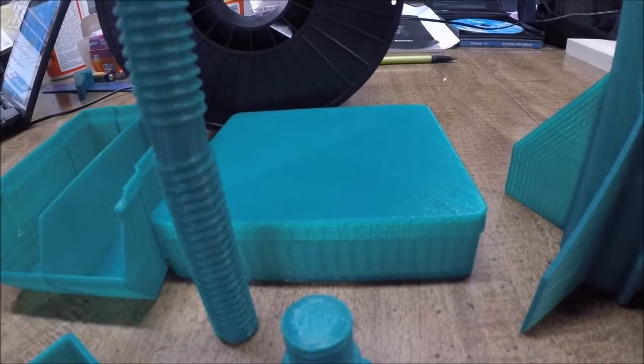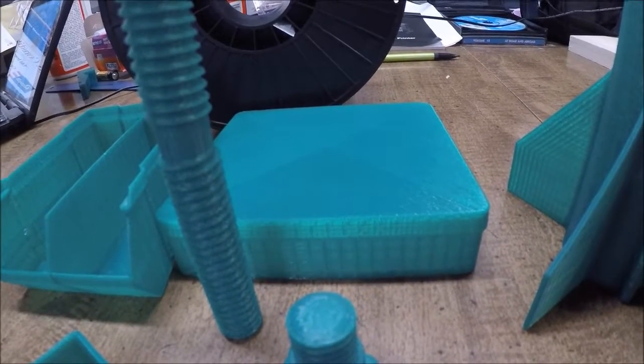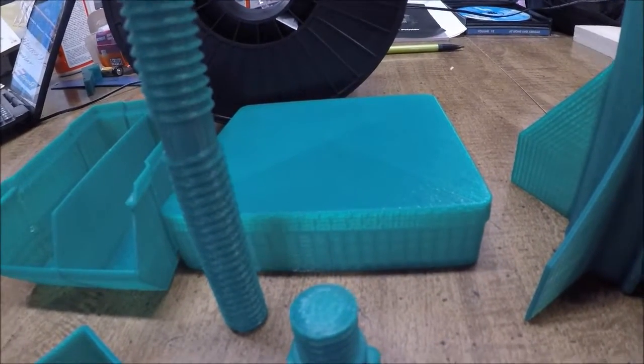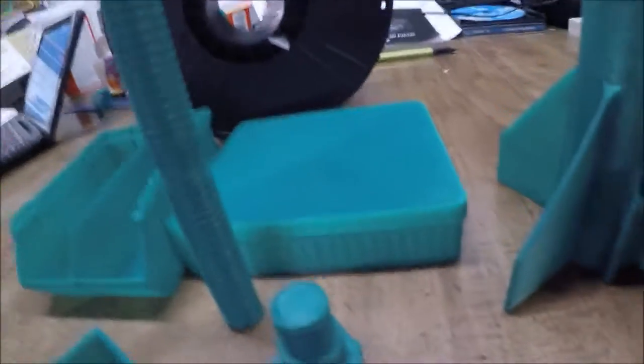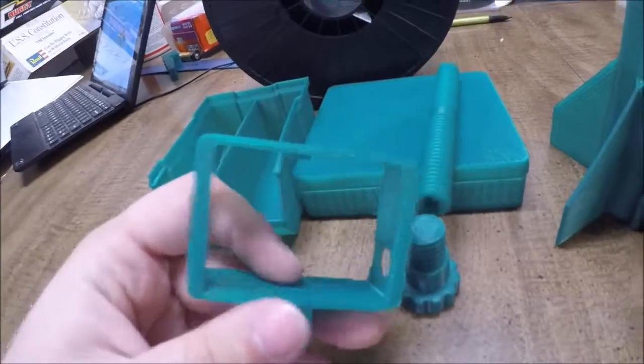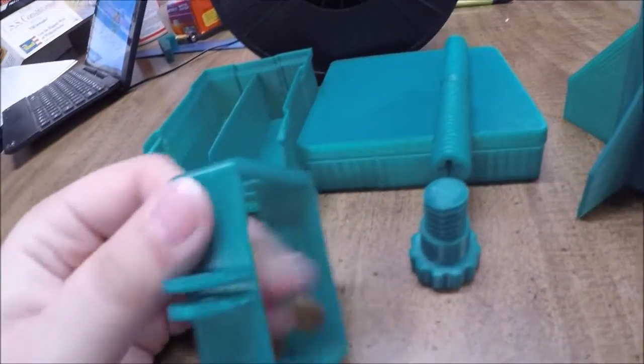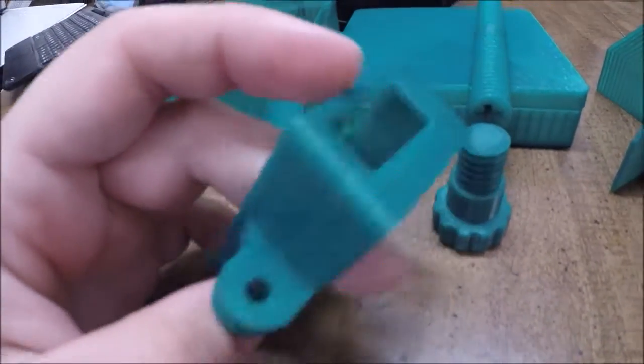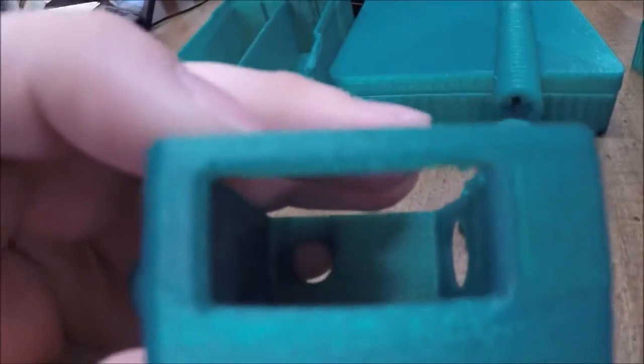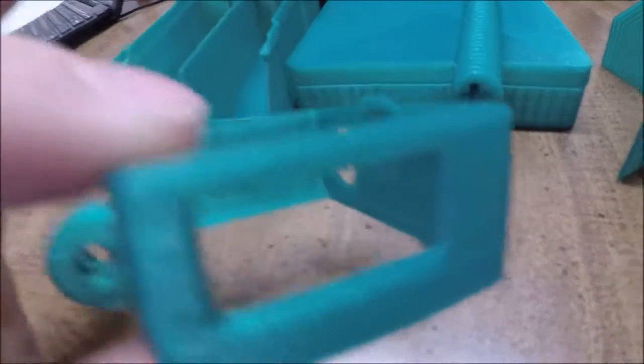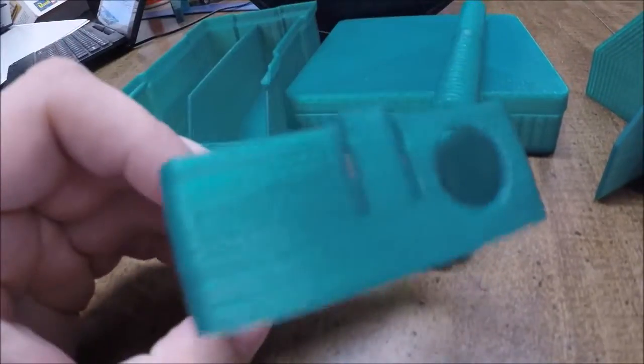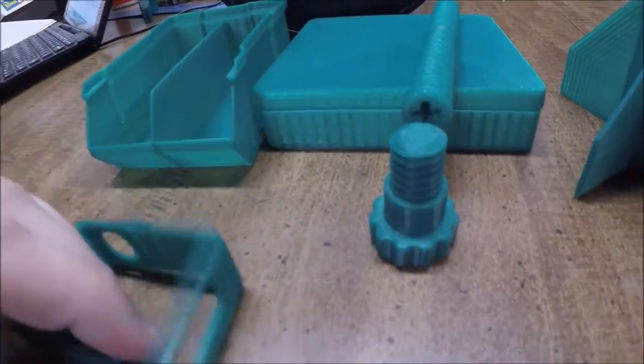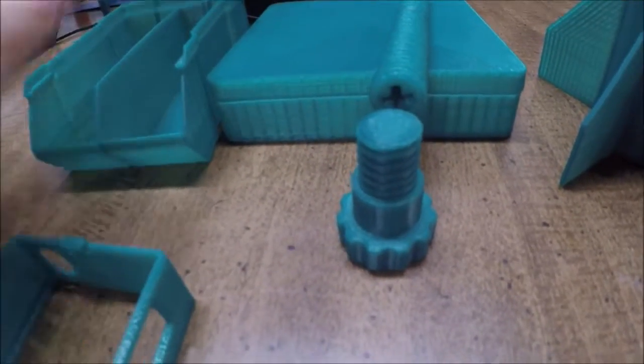I got a few prints here. I have this GoPro mount that I printed out and it turned out really nice. As you can see here, when it bridged across here there was no warping, no stringing. The color doesn't show up on camera very well, but it is a dark green color that kind of shines in the light. I really like it.